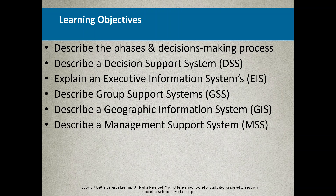We'll look at Decision Support Systems — referred to as a DSS — or an Executive Information System, and Group Support Systems. Geographic Information Systems are a specialty type focused on mapping and demographics. It's a very specialized niche; most companies wouldn't really use this to any great degree, except for things like where their market is coming from or demographics of their customers. Management Support Systems would be another one.